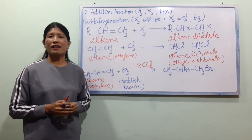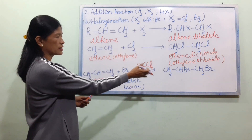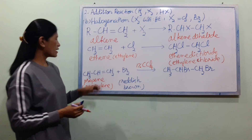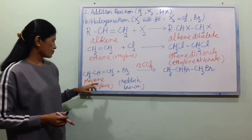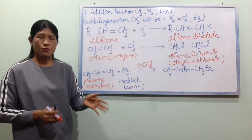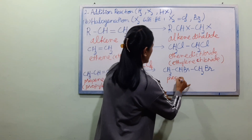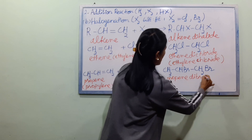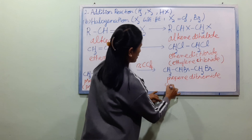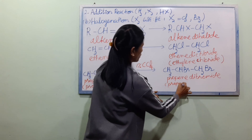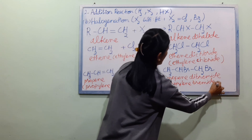CH2BR will be added to this one. So this will give a colorless product. We call it propyl bromide — B, R, O, M, I, D, E — bromide.